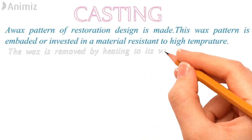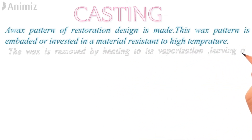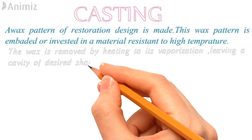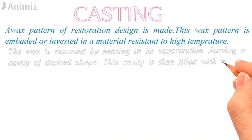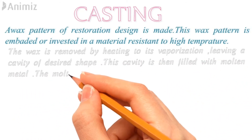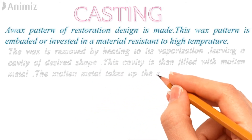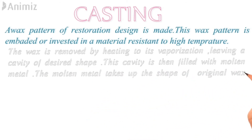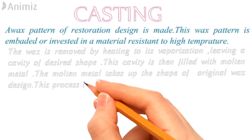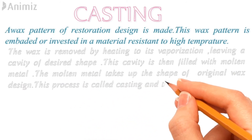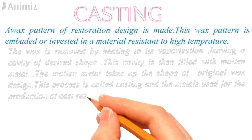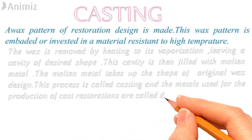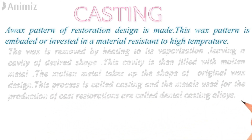The wax is removed by heating to its vaporization, leaving a cavity of the desired shape. This cavity is then filled with molten metal. The molten metal takes up the shape of the original wax design. This process is called casting, and the metal used for the production of cast restorations is called dental casting alloy.